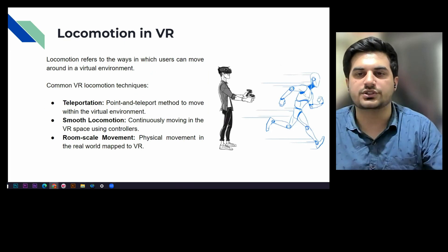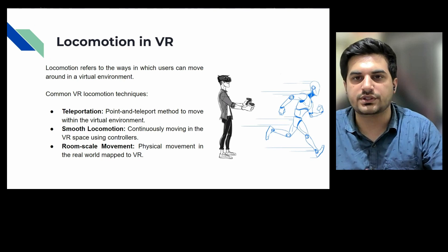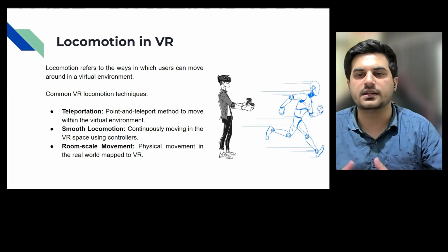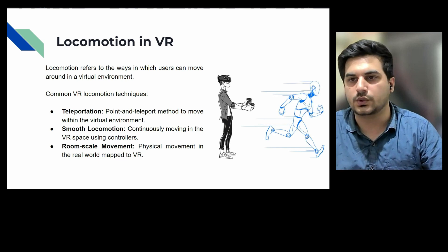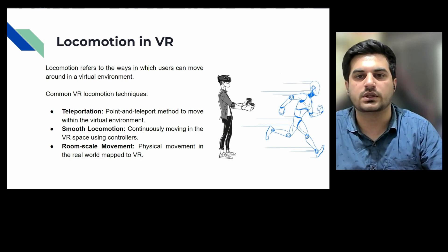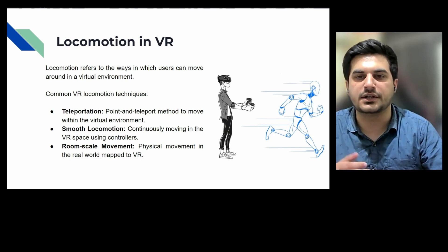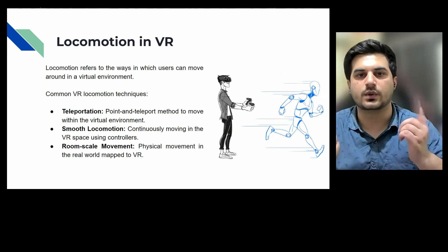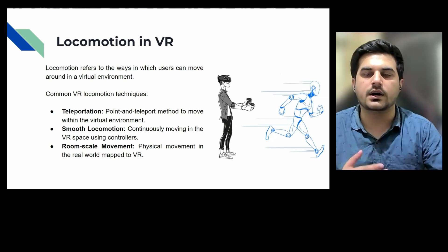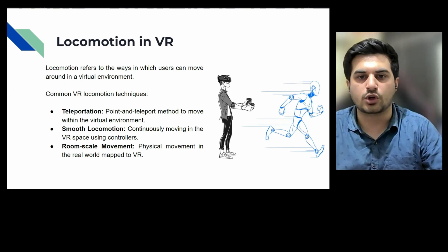Virtual reality has great potential in creating accessible solutions. By leveraging this technology, developers and designers can address mobility challenges and offer inclusive experiences. Locomotion was my topic — it refers to the way in which users can move around in a virtual environment. The popular use cases of locomotion are teleportation, smooth locomotion, and room-scale movement.